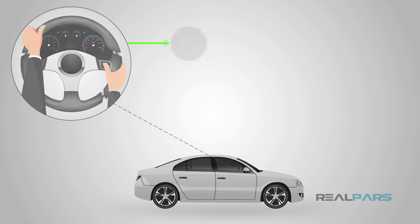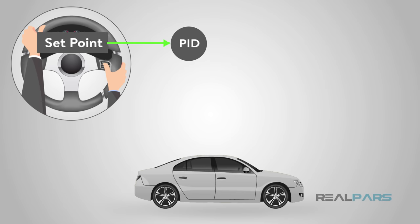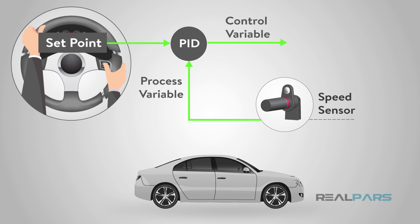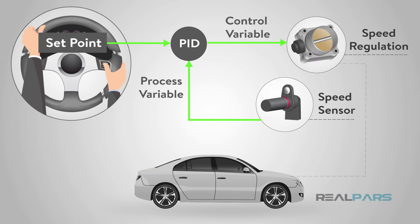The cruise control on a car is a good example of this type of control. Basically, you tell the controller how fast you want to go — the setpoint — and the controller samples the actual speed, the process variable, and then the controller calculates an output value, the control variable, and sends that signal to the gas pedal.